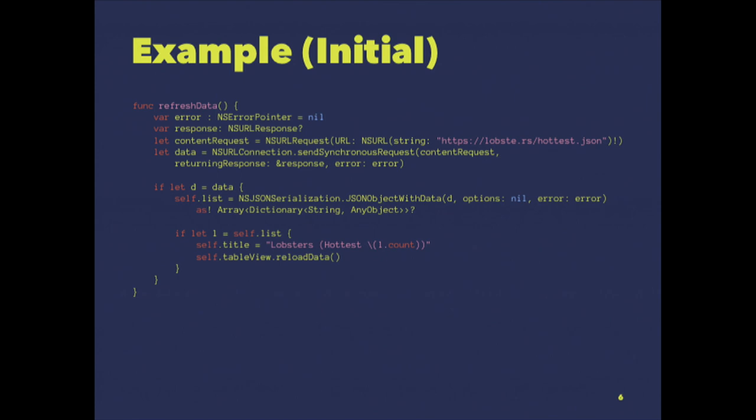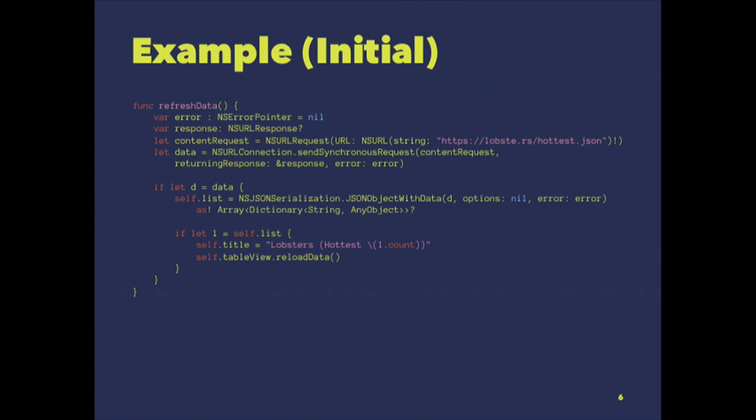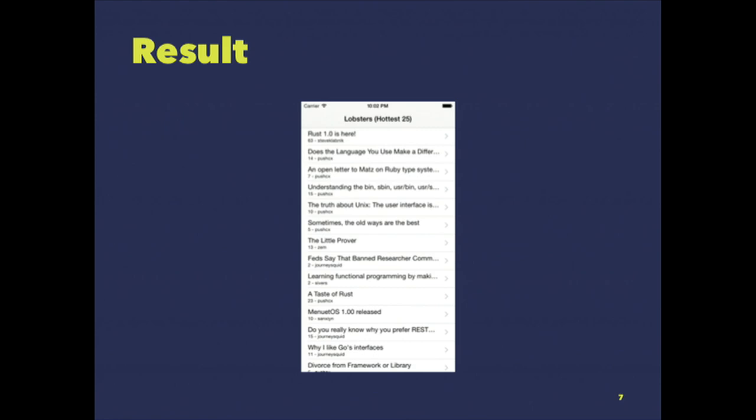Let's see this example. It's very simple. We have a data connection, we get a list of JSONs from Lobsters — the last entries — then we serialize the data, and if we have the data, we set the title with the number of entries and reload the table view.